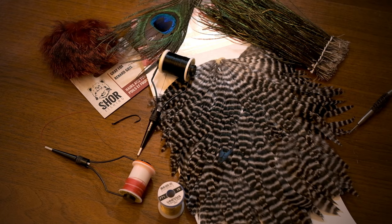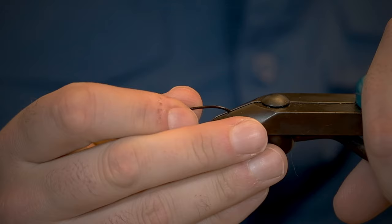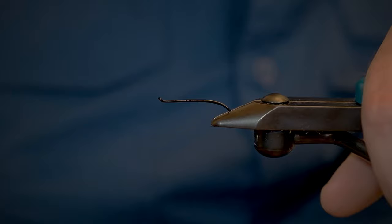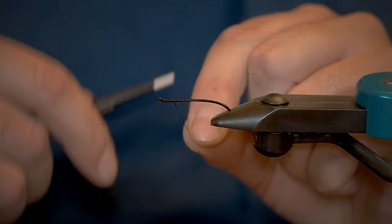Alright, so we're going to grab our hook. Today I'm using a number 6 Maruto M30. And we're going to start. Actually, I'm still using 140 from a previous tying video, but I've got UTC thread here. 70 is fine. UTC is great stuff.